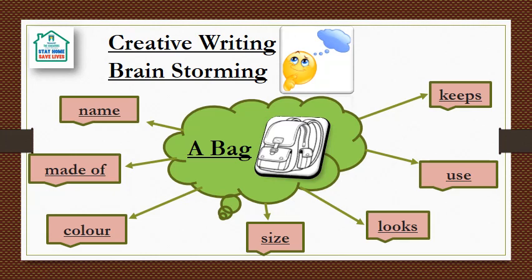There are some points. The first point is name. Second is made of. Third is color. Fourth point is size. Fifth point is looks. Sixth point is use — that is, how do you use your bag. The last point is keeps.